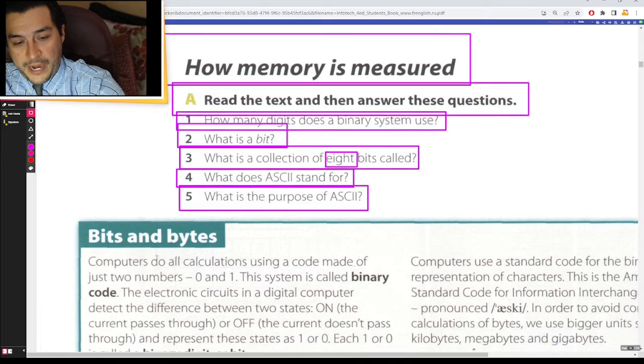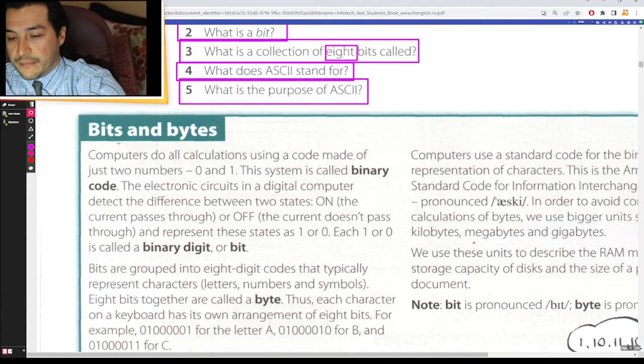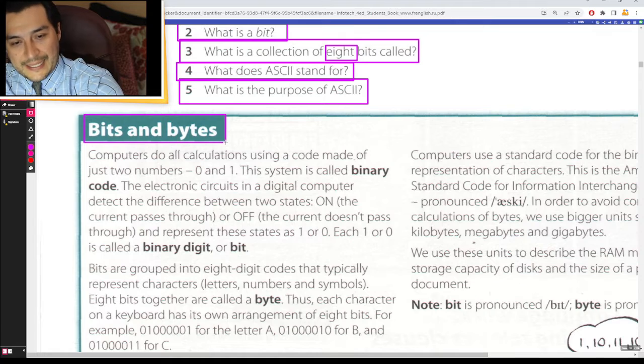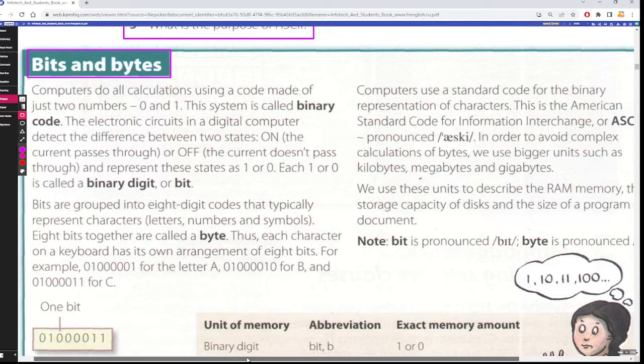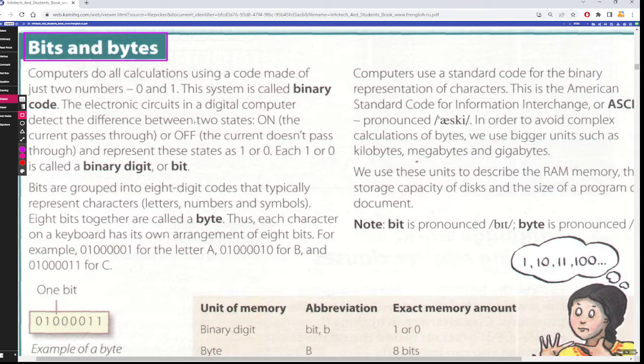Okay, let's read the paragraph. Actually, more than one paragraph. Bits and bytes. Computers do all calculations using a code made of just two numbers, zero and one. This system is called binary code.